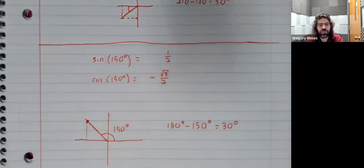So the sine is positive one half. The cosine is negative the square root of 3 over 2.